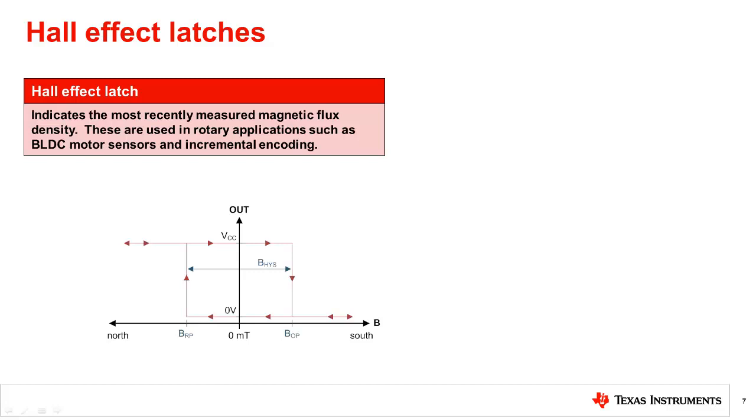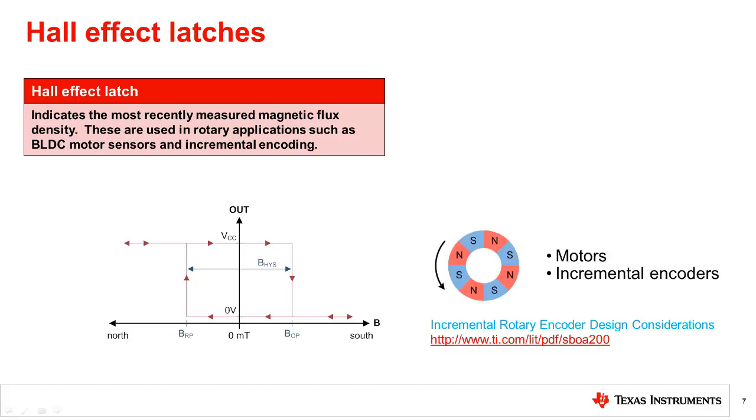Shown here is the output graph of a Hall effect latch. Applying a south magnetic pole near the top of the device causes the output to drive low. A north pole causes the output to drive high. And the absence of a magnetic field causes the output to continue to drive the previous state, whether low or high. For more information on considerations behind the common rotary encoding sensing technologies, check out our tech note at the following link.